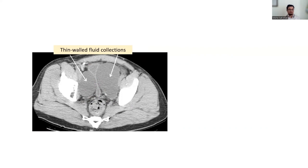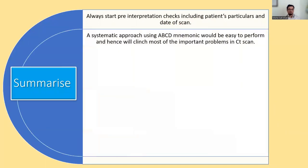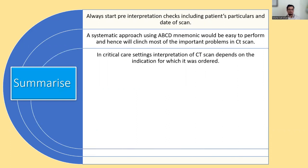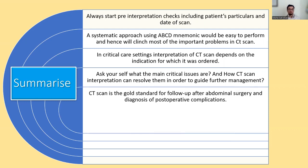That concludes the information about abnormal CT scan interpretation. Summary points: always start with pre-interpretation checks including patient particulars and date of scan. A systematic approach using the A, B, C, D mnemonic makes it easy to identify most important problems on CT scan. In critical care settings, interpretation depends on the indication for which the scan was ordered — ask yourself what the main clinical issues are and how CT interpretation can guide your management. CT scan is the gold standard for follow-up after abdominal surgery and diagnosis of post-operative complications.